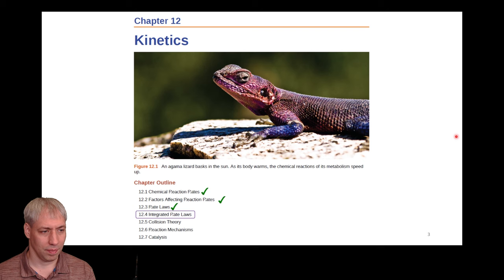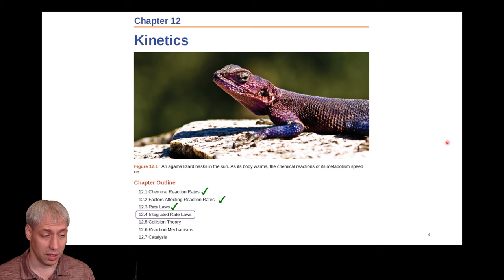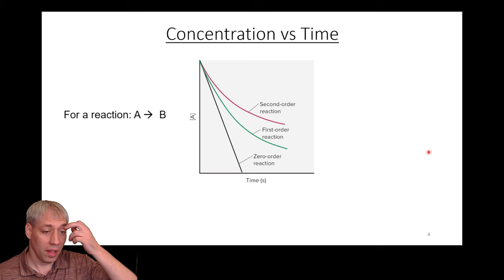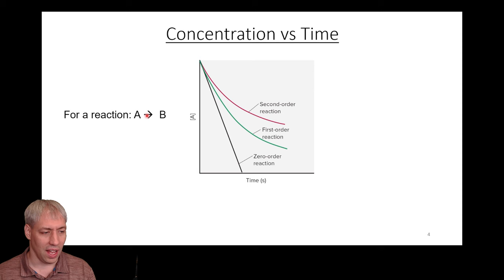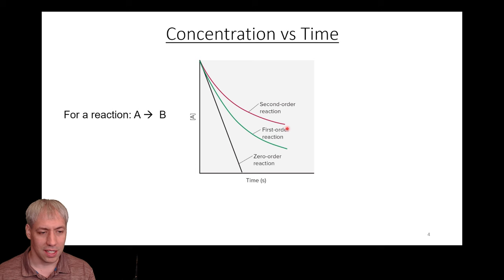So integrated rate laws. We've taken this journey — we talked about defining reaction rates in molarity per second, factors affecting those rates, and then we talked about rate laws: the proportionality between rate and concentration as dictated by the rate constant of the reaction. We talked about orders of reaction, and for a reaction of A turning into B, we're going to see A disappear over time. Depending on the nature of the reaction, it's going to disappear at different rates, and that rate is dictated by the order of the reaction.